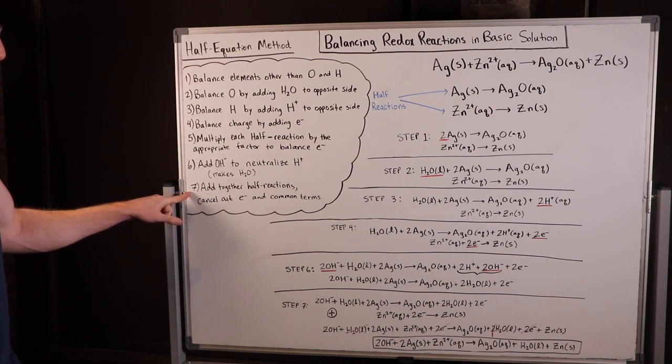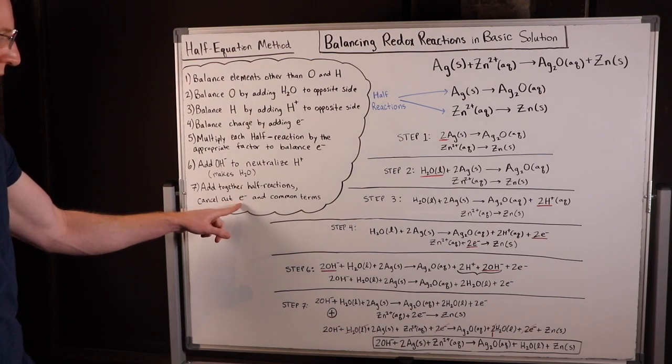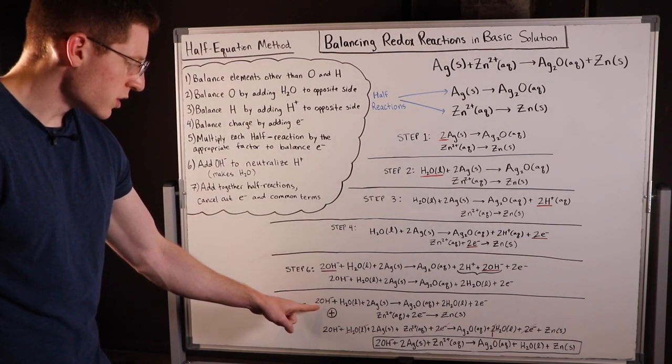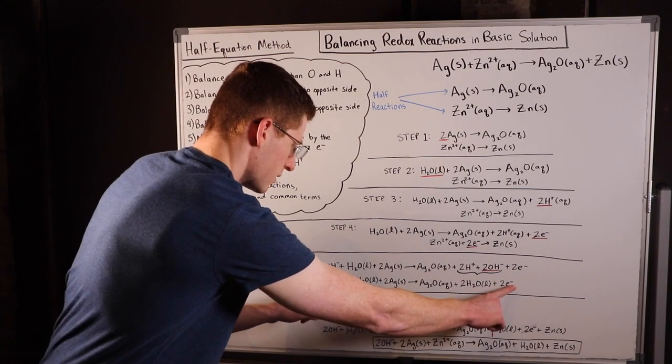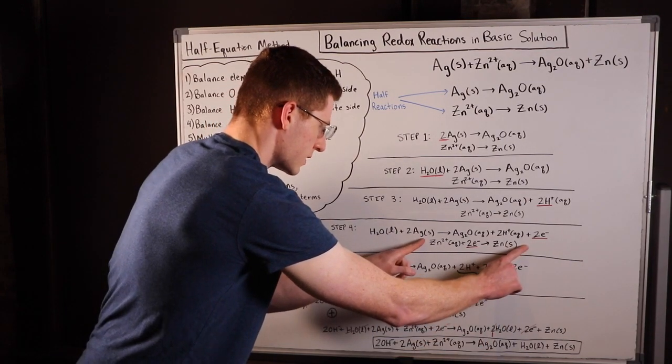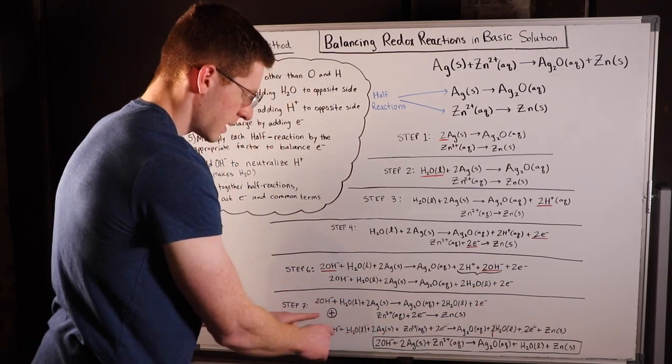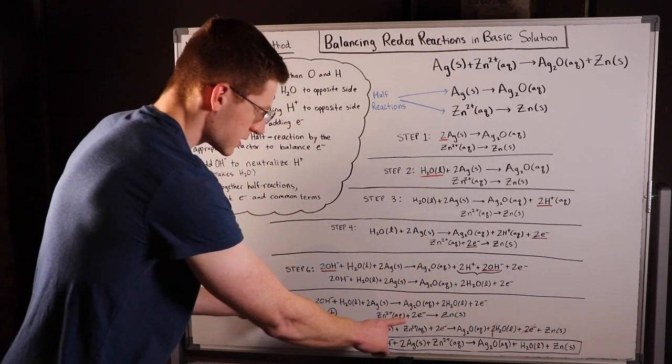Finally in step seven we add together our final half reactions and then we cancel out common terms and electrons. In step seven I took this reaction here and put it here, and I took this reaction that we had here when it was finished and put it here, and I added them together. I add together all of the reactants and all the products and I get this giant resultant equation down here.